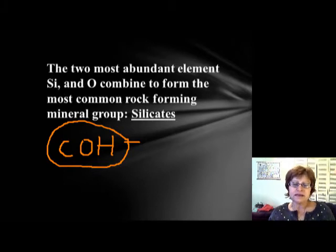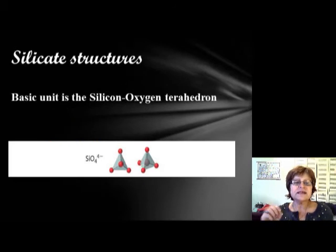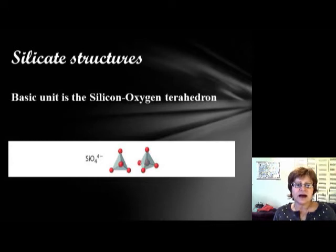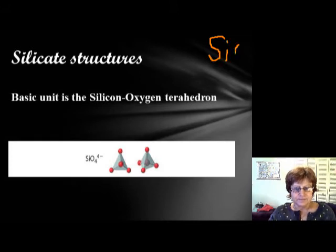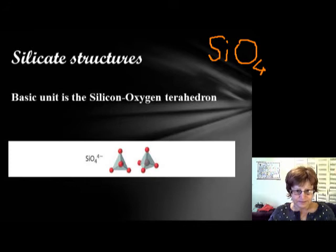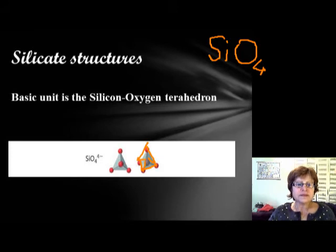Depending on the amount of silicon and oxygen, we get different silicate structures. The most basic unit is the silica-oxygen tetrahedron, with the chemical formula SiO₄. As shown in the picture, the four red ones are oxygens and the one in the middle is silicon. This structure is a covalently bonded molecule.